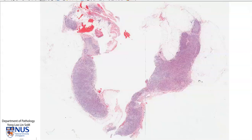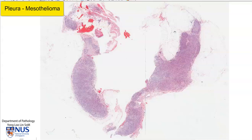This is a virtual microscopy slide of a malignant mesothelioma of the pleura. We can see here two tissue pieces of parietal pleura, and it is very abnormally thickened by tumor.